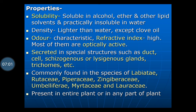Refractive index is high and most of them are optically active. They are secreted in special structures such as ducts, cells, schizogenous or lysigenous glands, and also in the trichomes. Commonly found in the families such as Labiateae, Rutaceae, Piperaceae, Zingiberaceae, Umbelliferae, Myrtaceae, and Lauraceae. They are present in entire plant or in the particular part of the plants — they may be concentrated in the fruits, flower, stem, bark, leaf, or wood, and sometimes they are present in the whole plant.